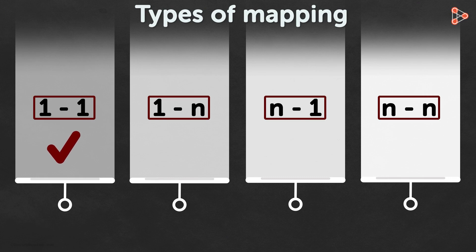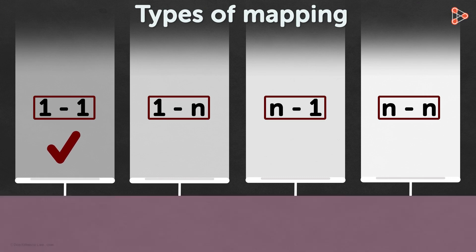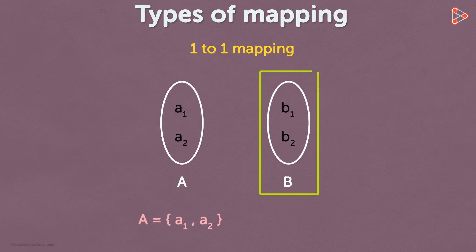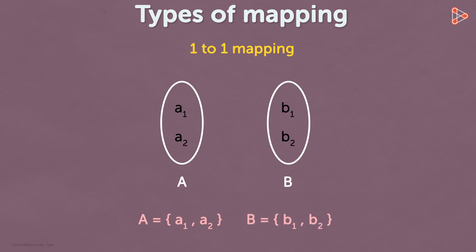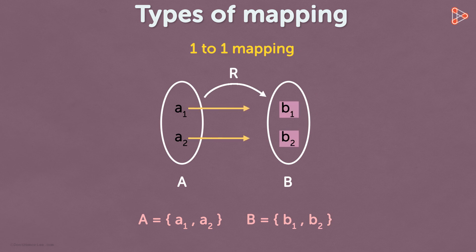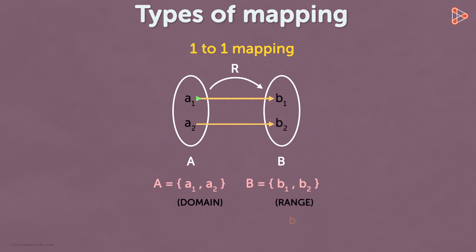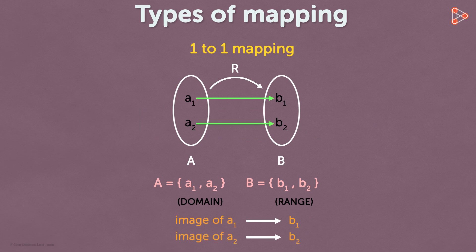Let's look at the first type of mapping, which is the one to one mapping. We have set A and set B. Set A has elements A1 and A2, and set B has elements B1 and B2. We can say a relation has a one to one mapping when each element in the range is an image of exactly one element in the domain. Here, B1 is the image of exactly one element A1, and B2 is the image of exactly one element A2.